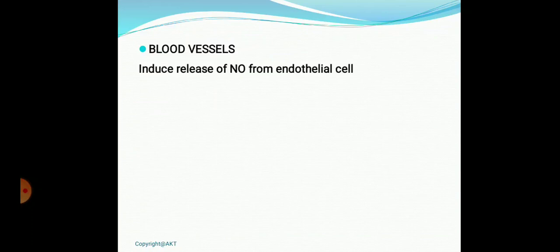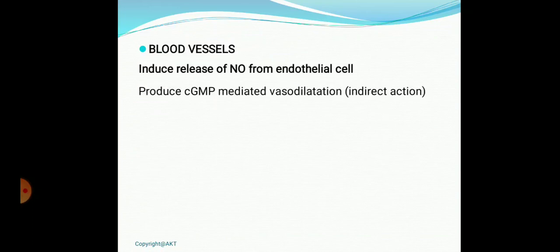Effect on blood vessels: in normal physiology, acetylcholine does not have much effect on blood vessels, but when administered exogenously, it induces the release of nitric oxide from endothelial cells by stimulating M3 receptors. The released nitric oxide diffuses into vascular smooth muscle and produces vasodilatation by stimulating cGMP production — a cGMP-mediated vasodilatation. This is an indirect action.